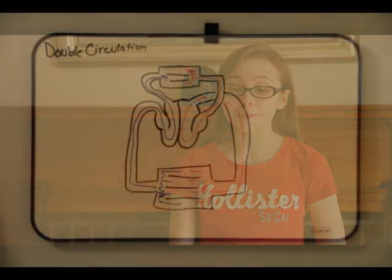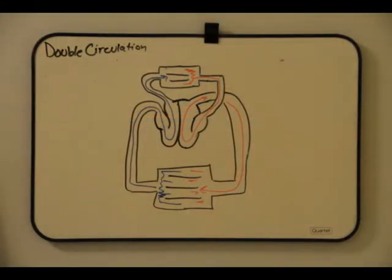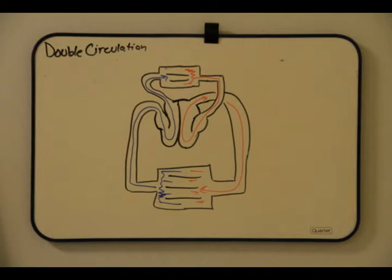The circulatory system transports fluid in bulk through tubes in the body and connects the aqueous environment of body cells to organs that exchange gases, absorb nutrients, and dispose of waste.